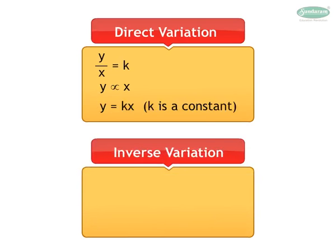Inverse Variation: When the values of y and x change in such a way that y into x is constant, which is k, then y is said to vary inversely as x. It is symbolically written as y equals k upon x, where k is a non-zero number.